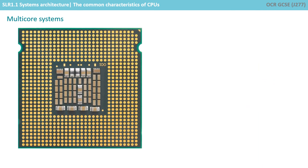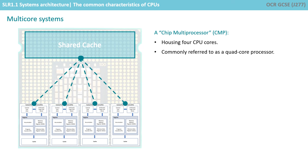Many people see a physical chip and call it a CPU. While this understanding is fine for your GCSE exams, it's technically incorrect if this chip has more than one core. It would more commonly be referred to as a chip multiprocessor, or CMP, which itself actually houses — in this example — four CPU cores and some shared cache which can be used across all four. We more commonly just refer to this as a quad core processor or quad core CPU.